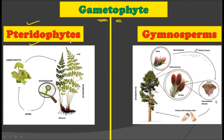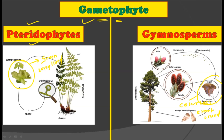Now let's talk about the gametophyte. The gametophyte of pteridophytes is green in color and long-lived — its life is quite long. On the other hand, the gametophyte of gymnosperms is colorless and very short-lived. So the gametophyte of pteridophytes is green and long-lived, while the gametophyte of gymnosperms is short-lived and colorless.